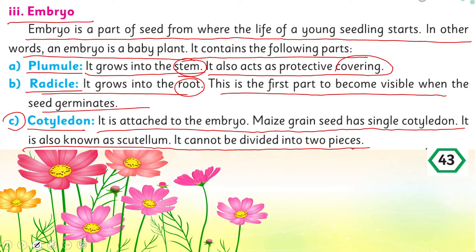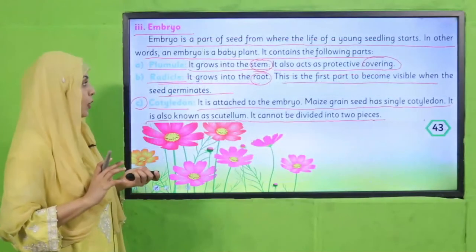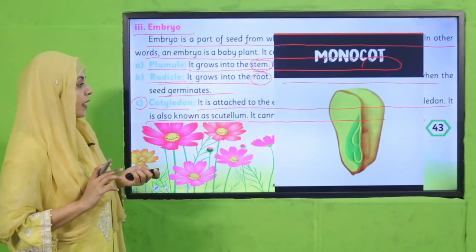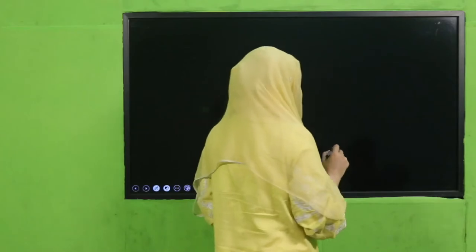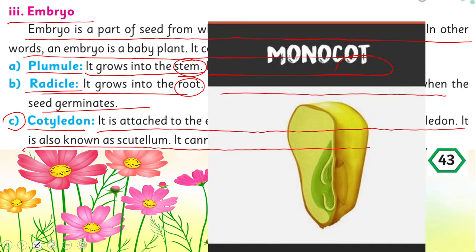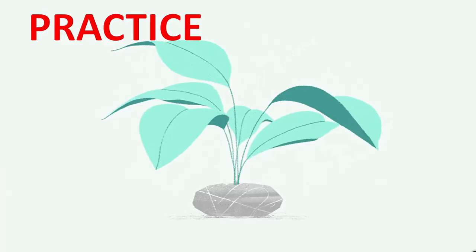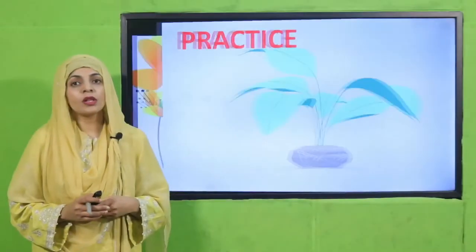The cotyledon is attached directly to the embryo. Looking at the seed diagram: you can see the seed coat, the embryo, the cotyledon, and the embryo has two parts — the plumule and the radicle.